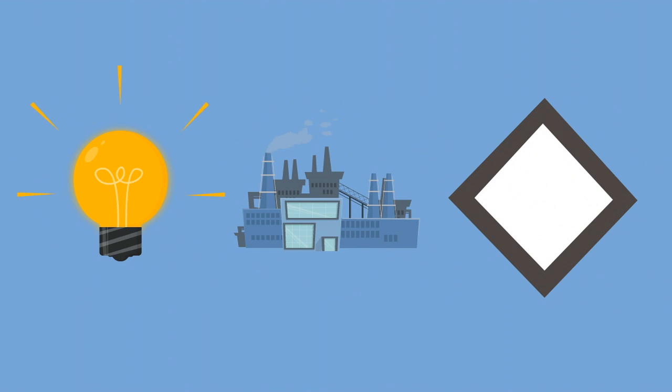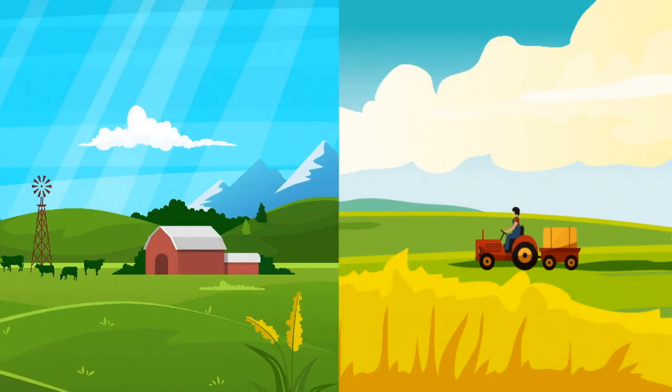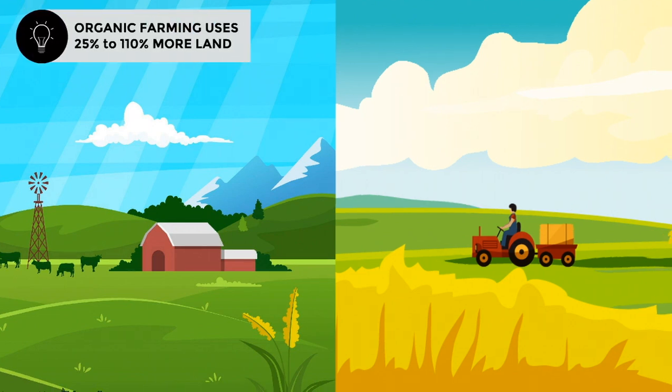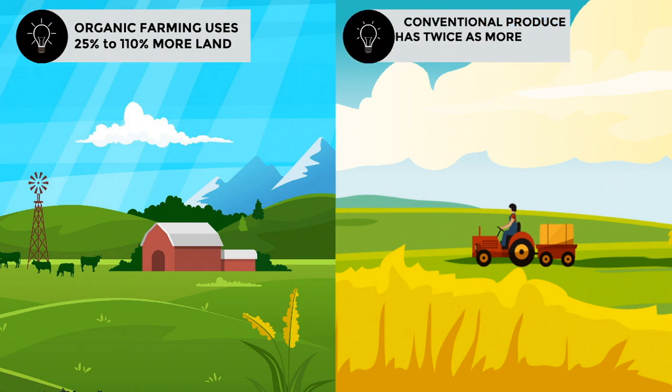The result, no production method is better for the environment. These mixed results also were confirmed by other studies. The biggest difference was land use, where conventional farming clearly won. And toxicity, where organic has a clear advantage.